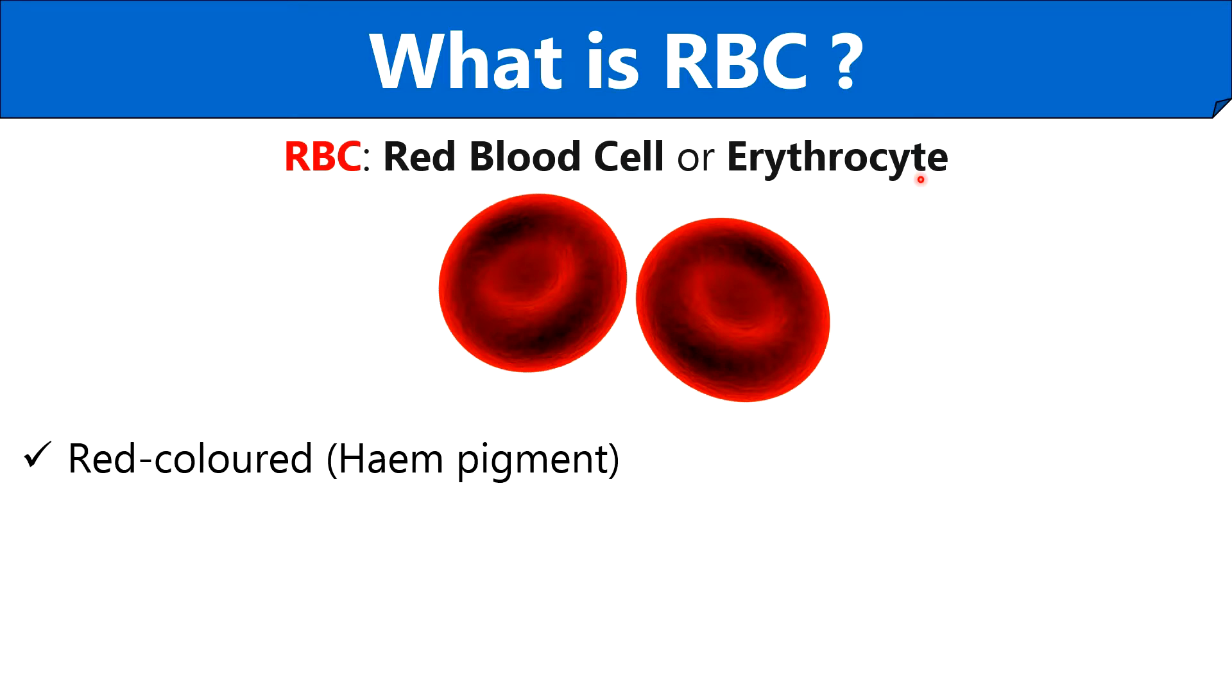Friends, do you know why RBCs are red color? The answer to this question is the presence of hemoglobin in the cytoplasm of RBCs that carries heme groups that impart red color not only to the RBCs but also to the blood.